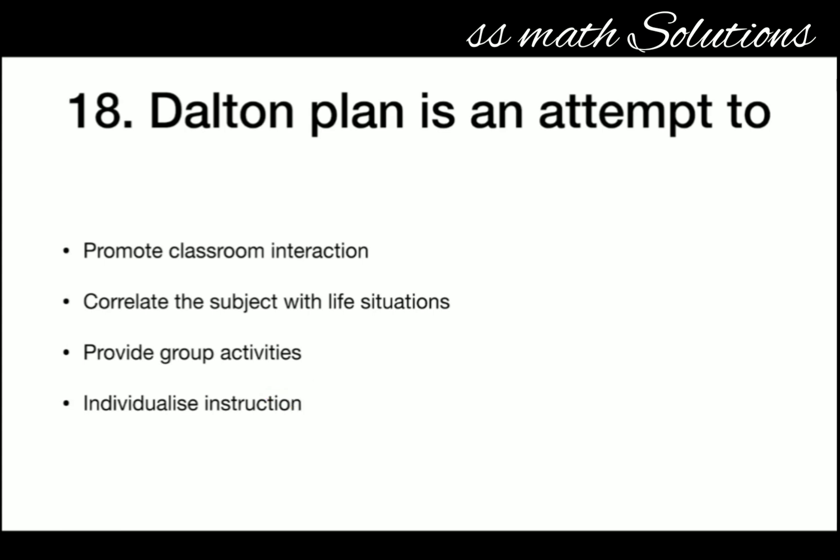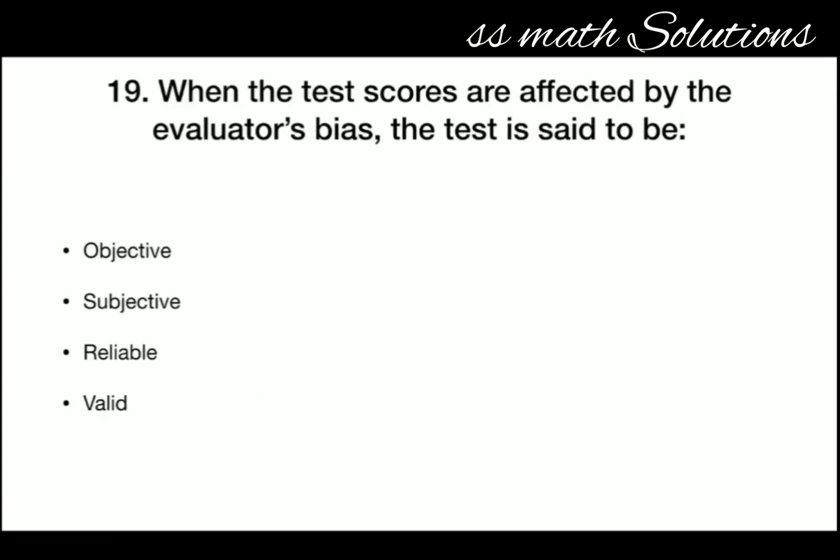When the test scores are affected by the evaluator's bias, the test is said to be — objective, subjective, reliable, or valid? The answer is subjective. When scores are affected by the evaluator's bias, the test is said to be subjective.